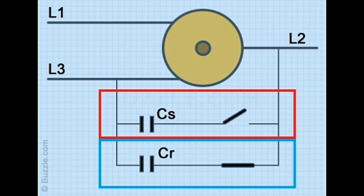L1, L2 equals single phase source voltages. L3 equals third voltage source produced by the converter. CS equals start capacitor, CR equals run capacitor. Working: The capacitor shifts the phase by creating a magnetic field that is equal to a three phase source.